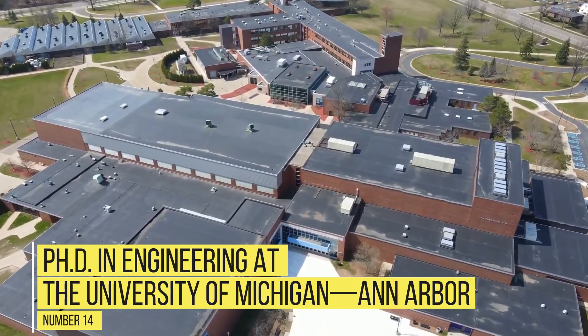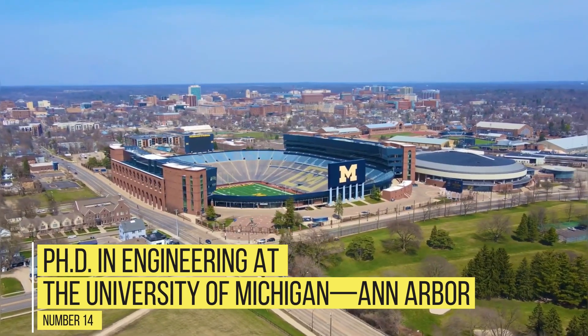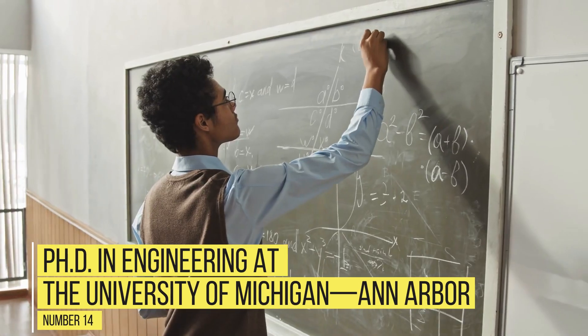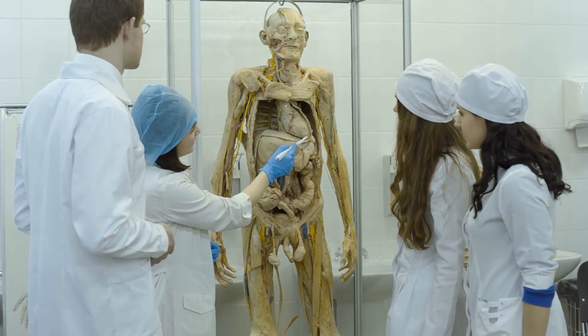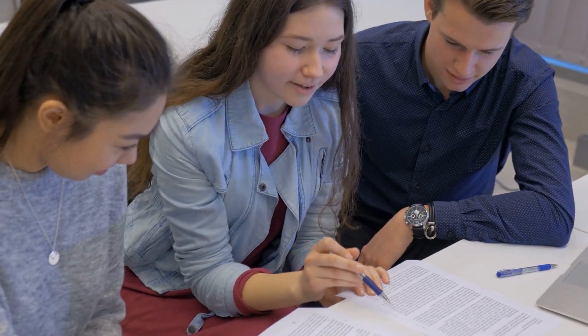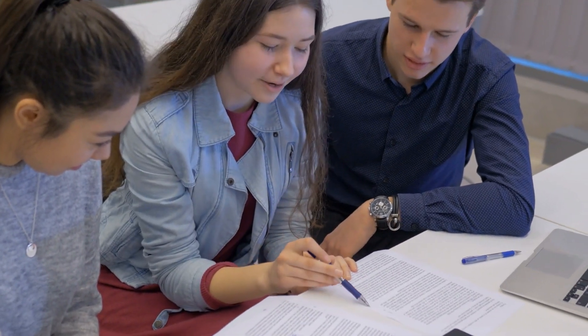Number 14: PhD in Engineering at the University of Michigan, Ann Arbor. All engineering doctoral students are guaranteed full funding, a monthly living stipend, and health insurance. The exact amount can vary, according to the program's website, and funding comes from a range of sources, including graduate student instructor positions and fellowships.